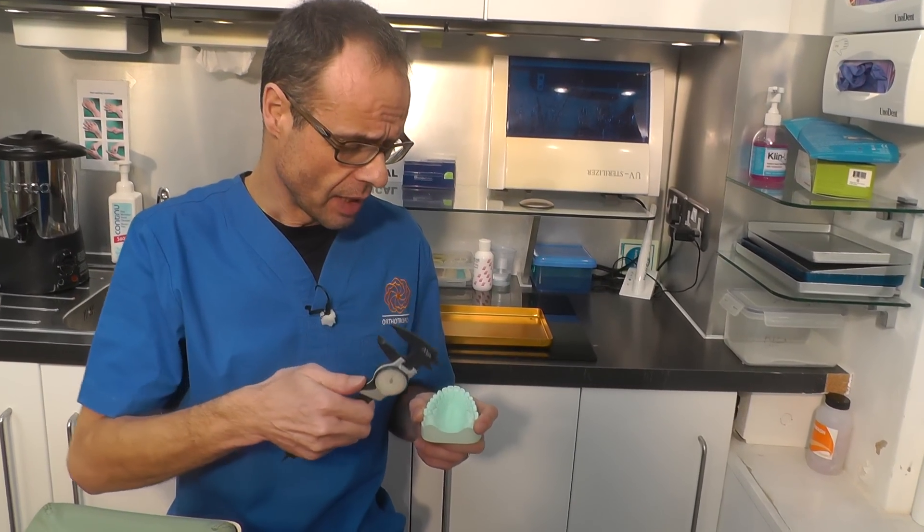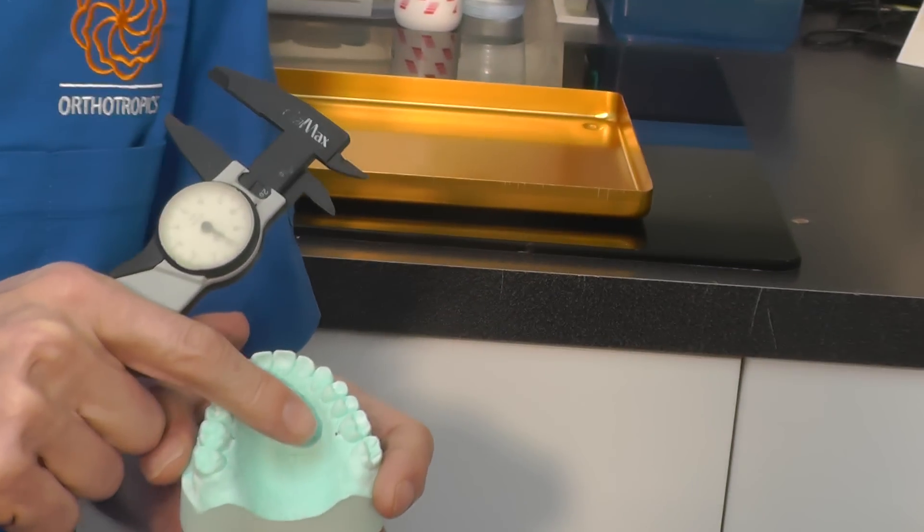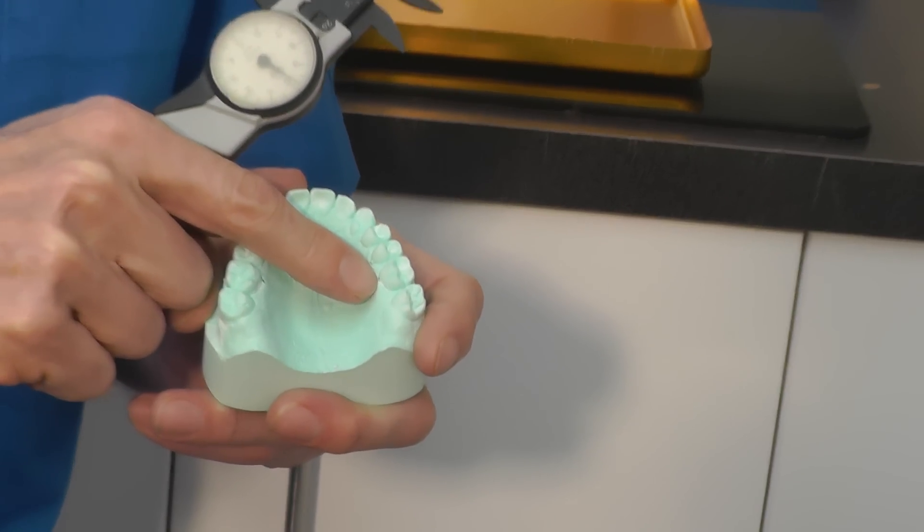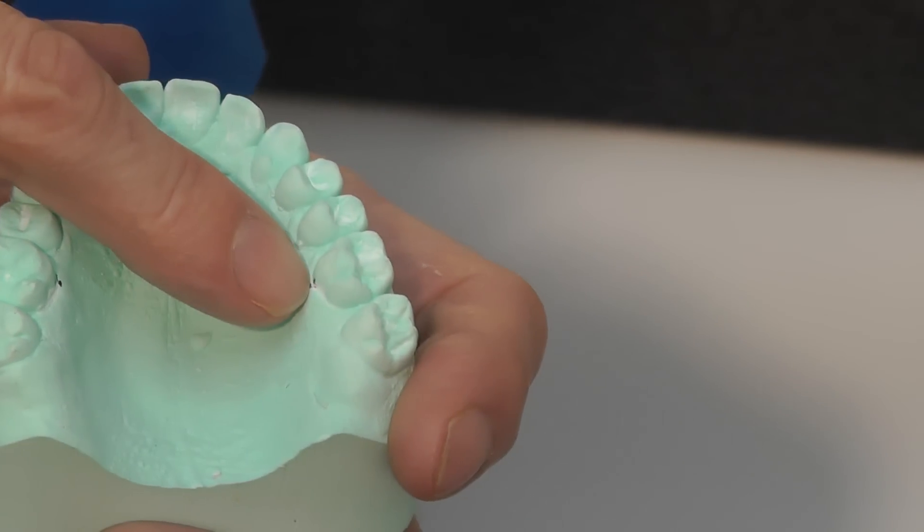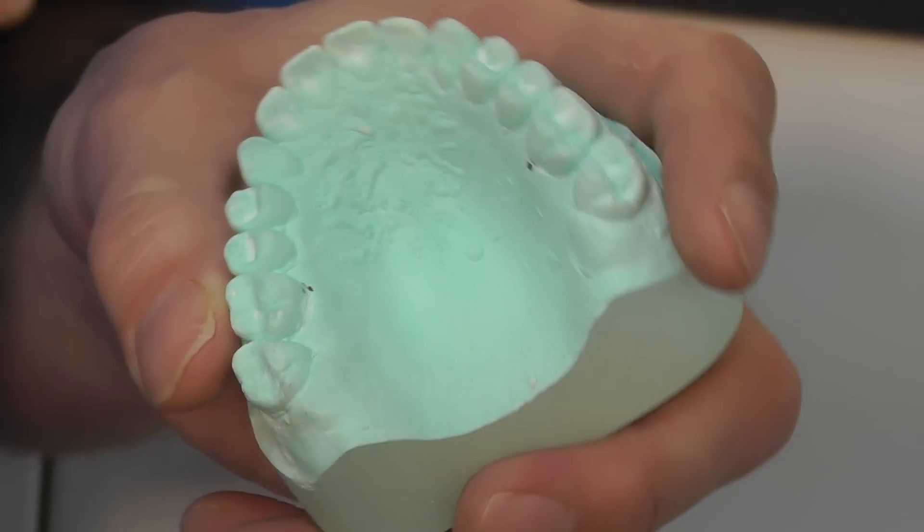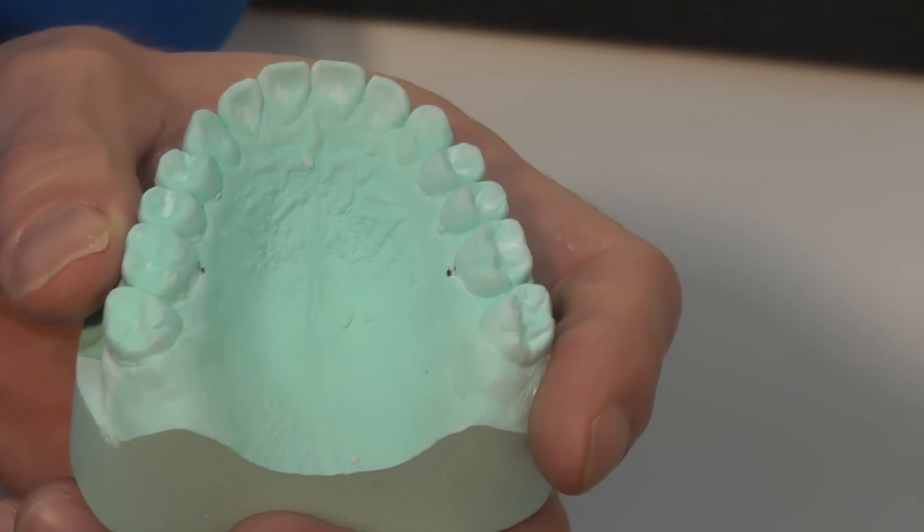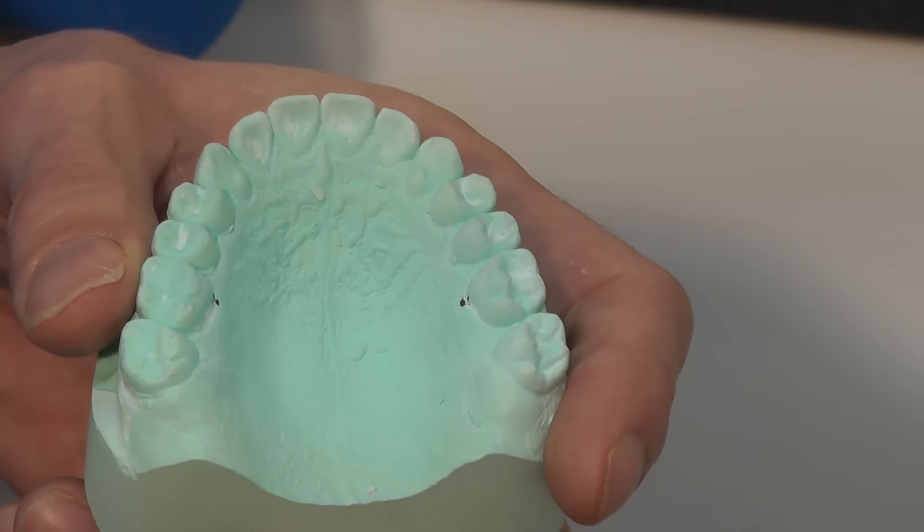We measure this using a dial caliper available from most hardware stores, measuring from the most gingival point of the molar on one side to the most gingival point on the other side. Those are the points marked closest to the gum. This seems to be the most reproducible point.